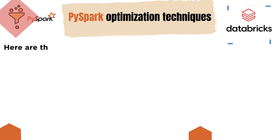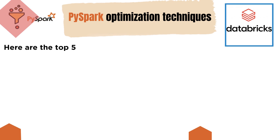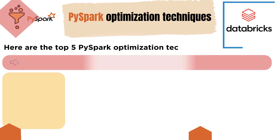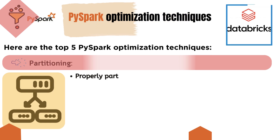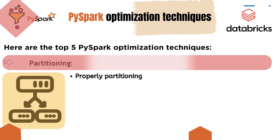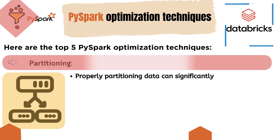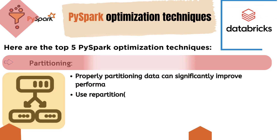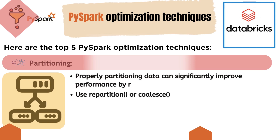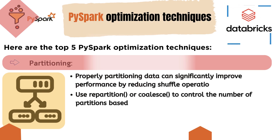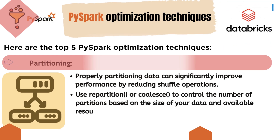Here are the top 5 PySpark optimization techniques. First, partitioning. Properly partitioning data can significantly improve performance by reducing shuffle operations. Use the repartition function or coalesce function to control the number of partitions based on the size of your data and available resources.